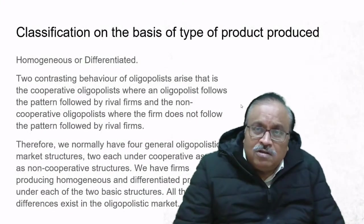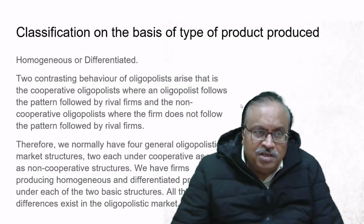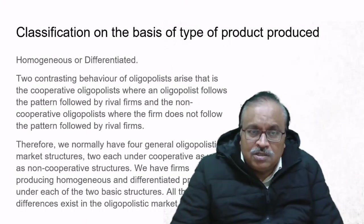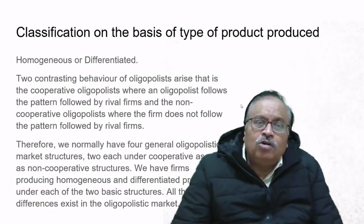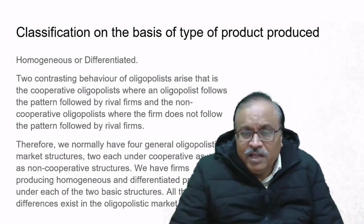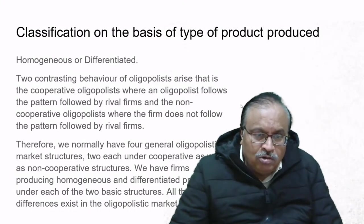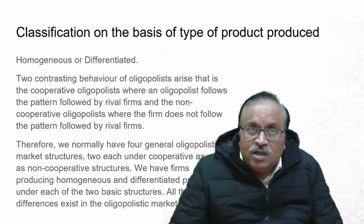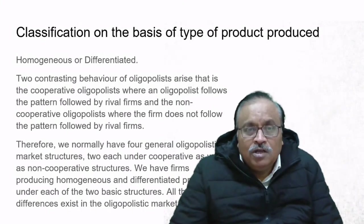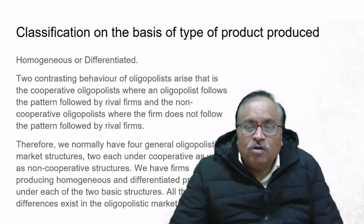Classification on the basis of type of product: either homogeneous or differentiated. Two contrasting behaviors of oligopolists arise: the cooperative oligopolist, who follows the pattern of rival firms, and the non-cooperative oligopolist, who does not. We normally have four oligopolistic market structures—two under cooperative (homogeneous cooperative and differentiated cooperative) and two under non-cooperative (homogeneous non-cooperative and differentiated non-cooperative).